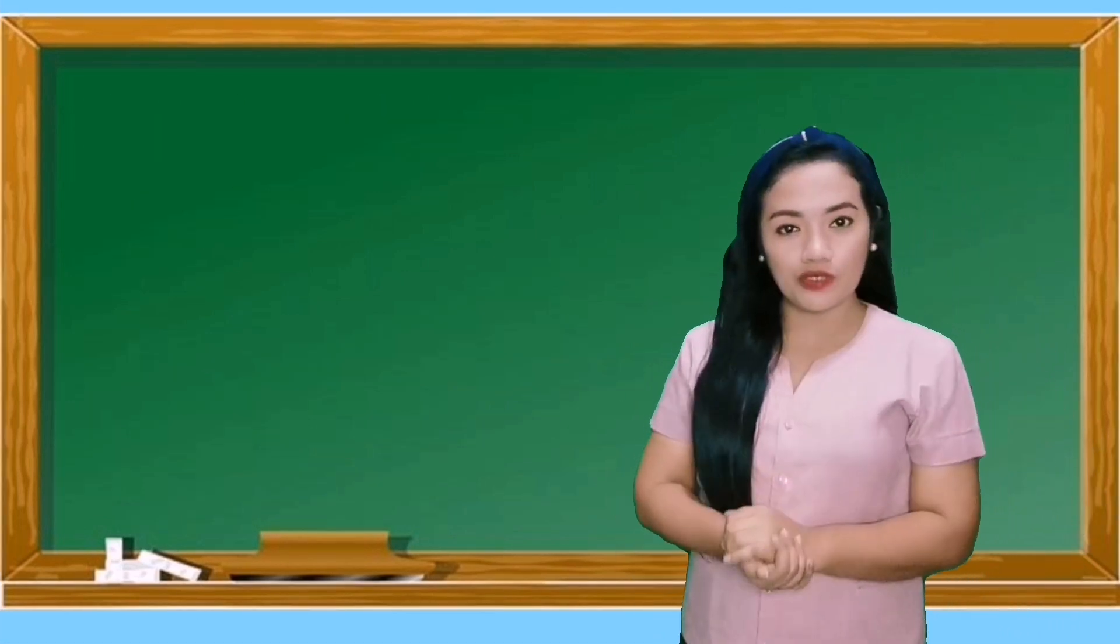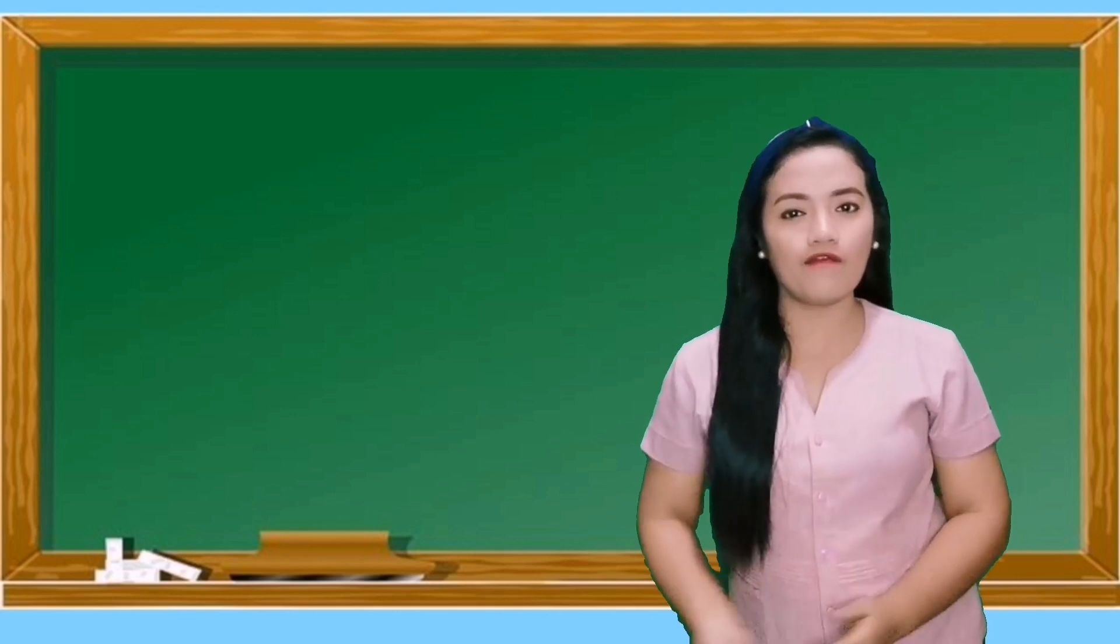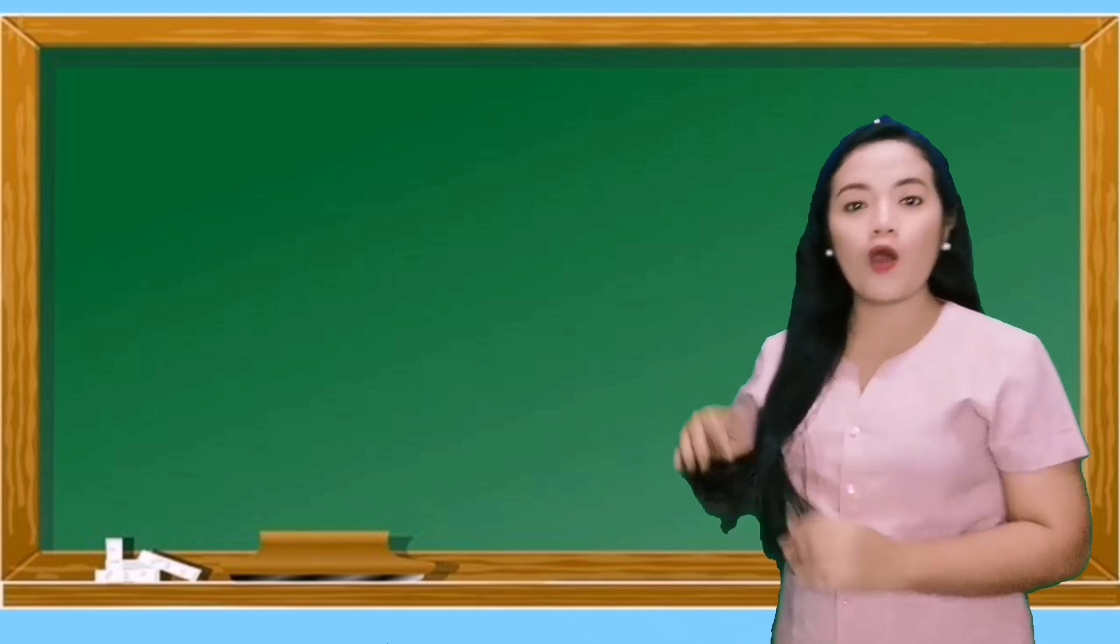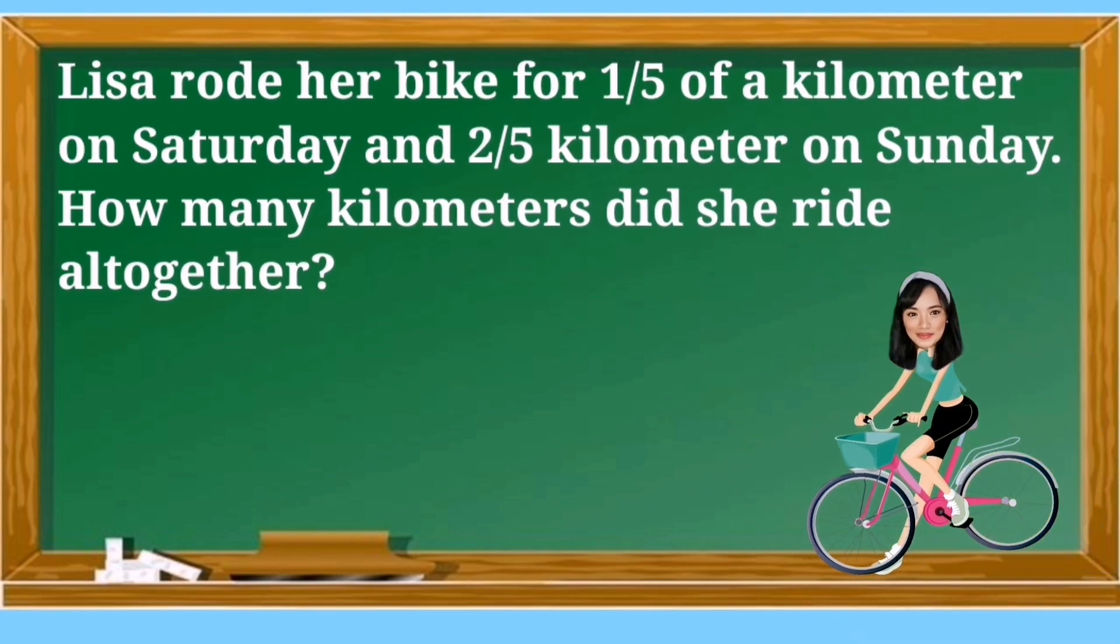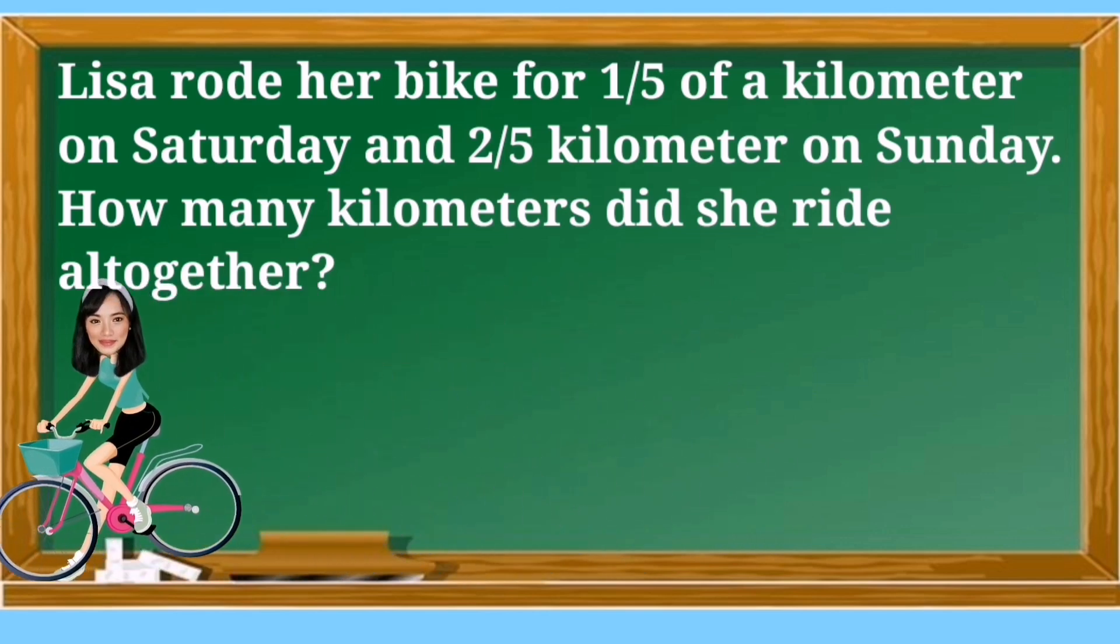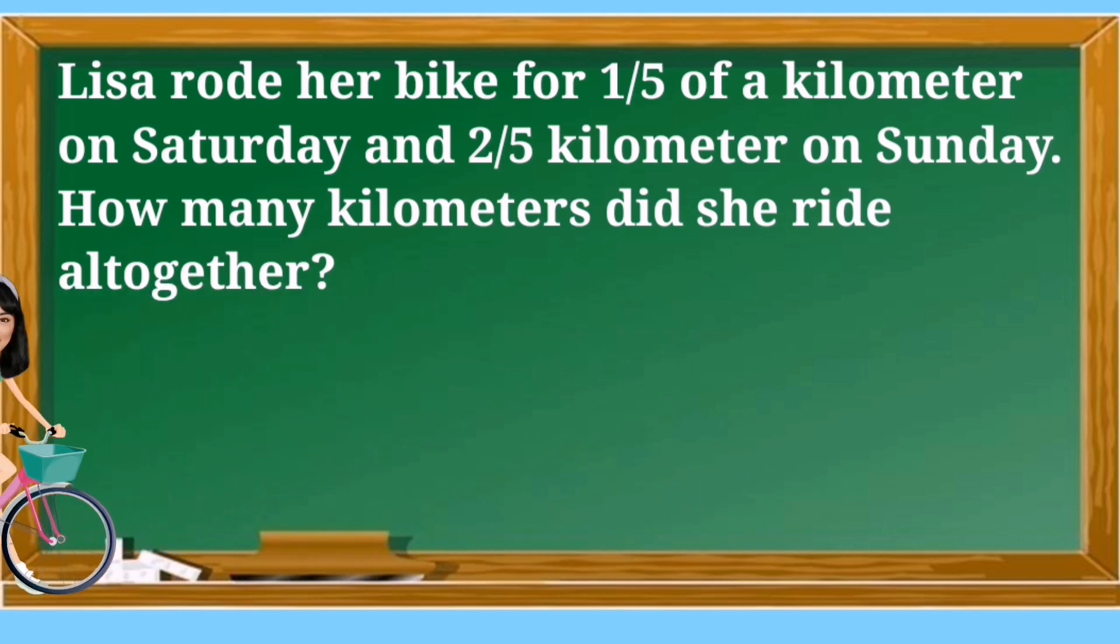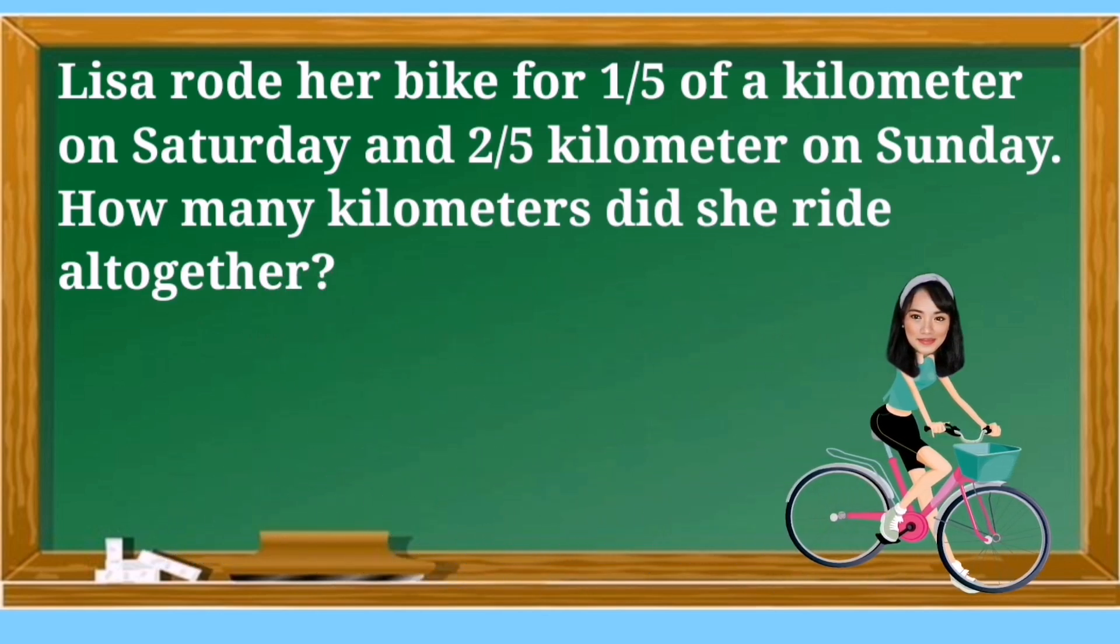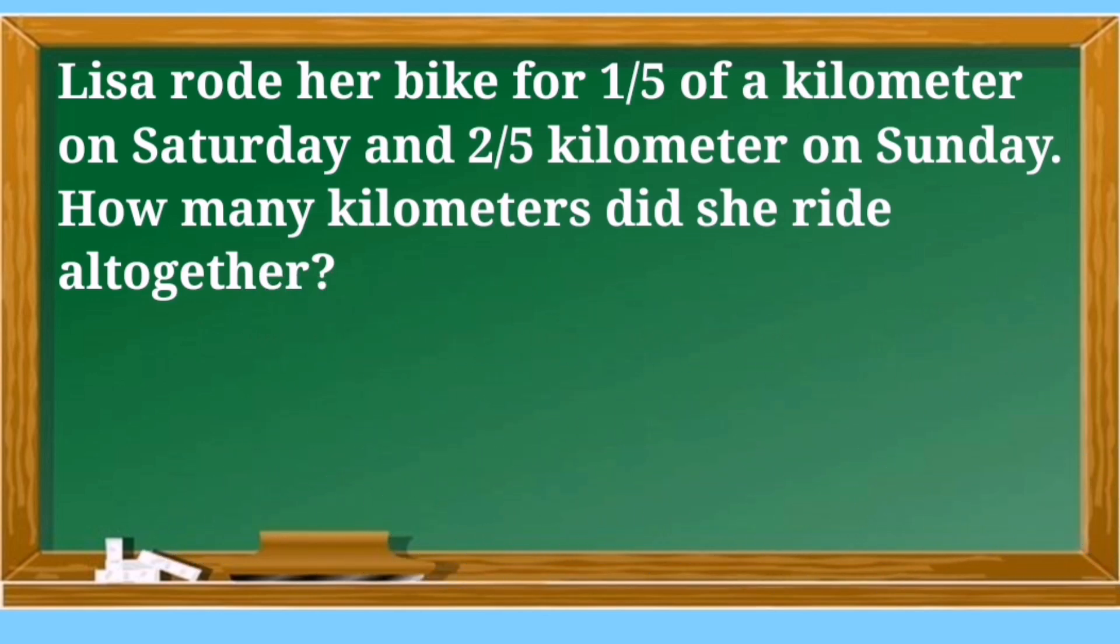The LCD of 3/5 and 2/3 is 15. I am pretty sure that you are now ready for our lesson today. Let us start with this problem. Lisa rode her bike for 1/5 of a kilometer on Saturday and 2/5 kilometer on Sunday. How many kilometers did she ride all together?